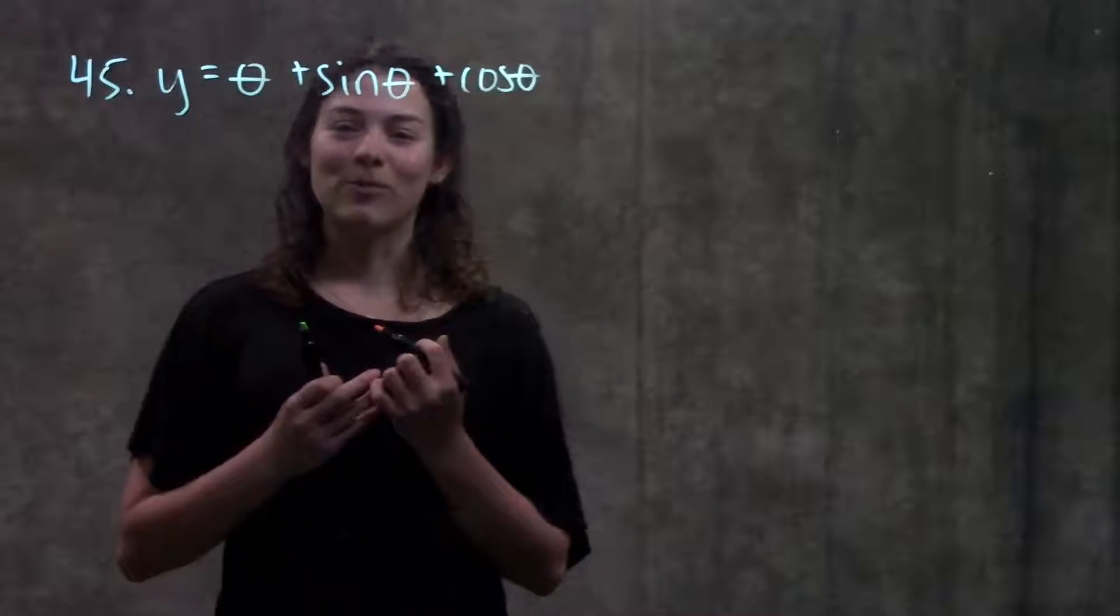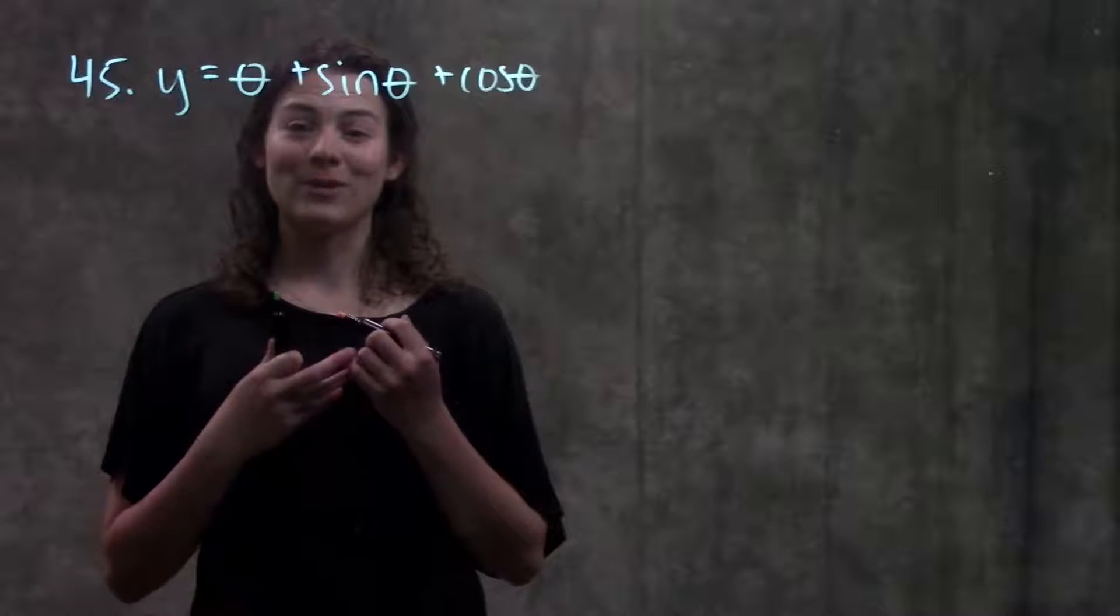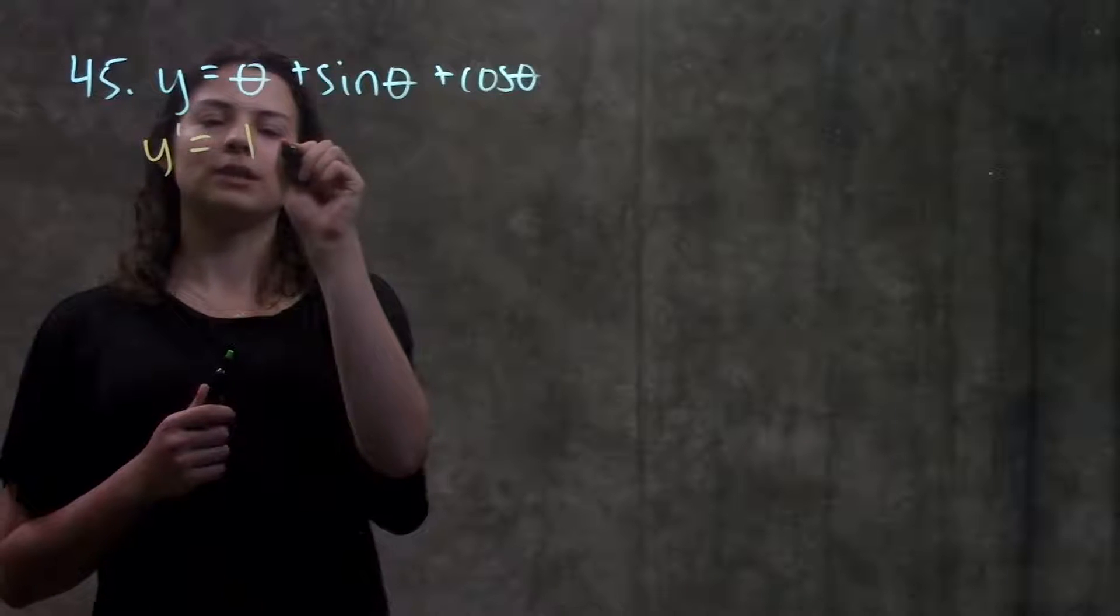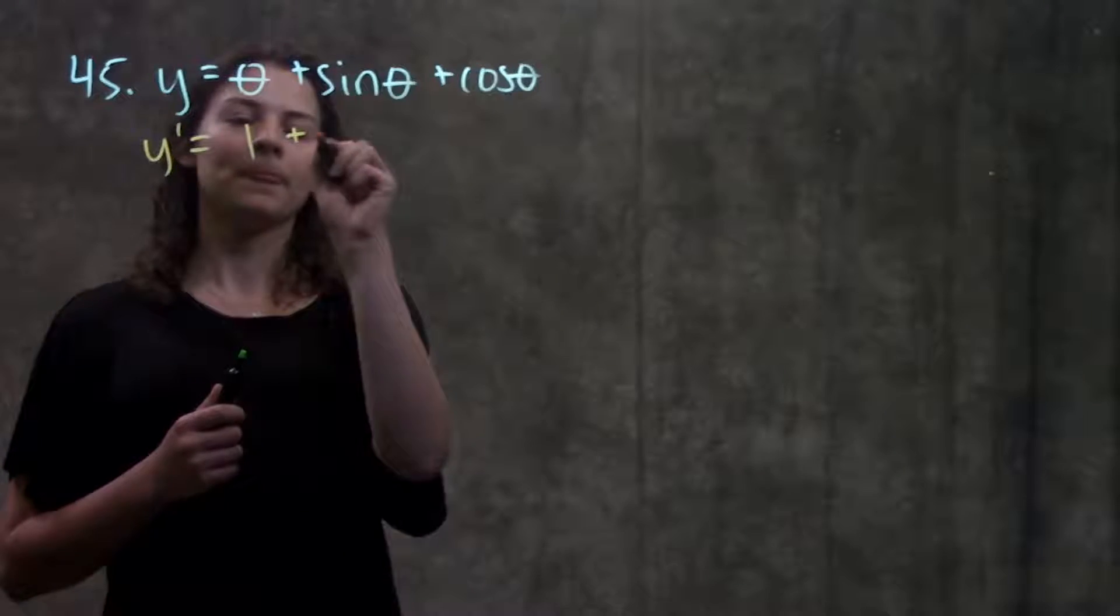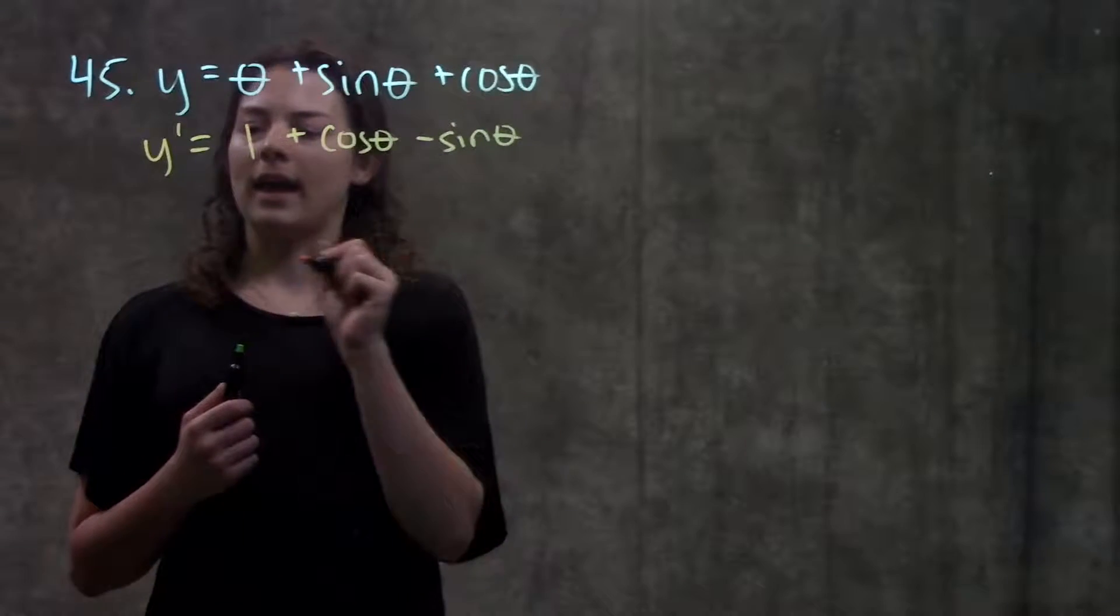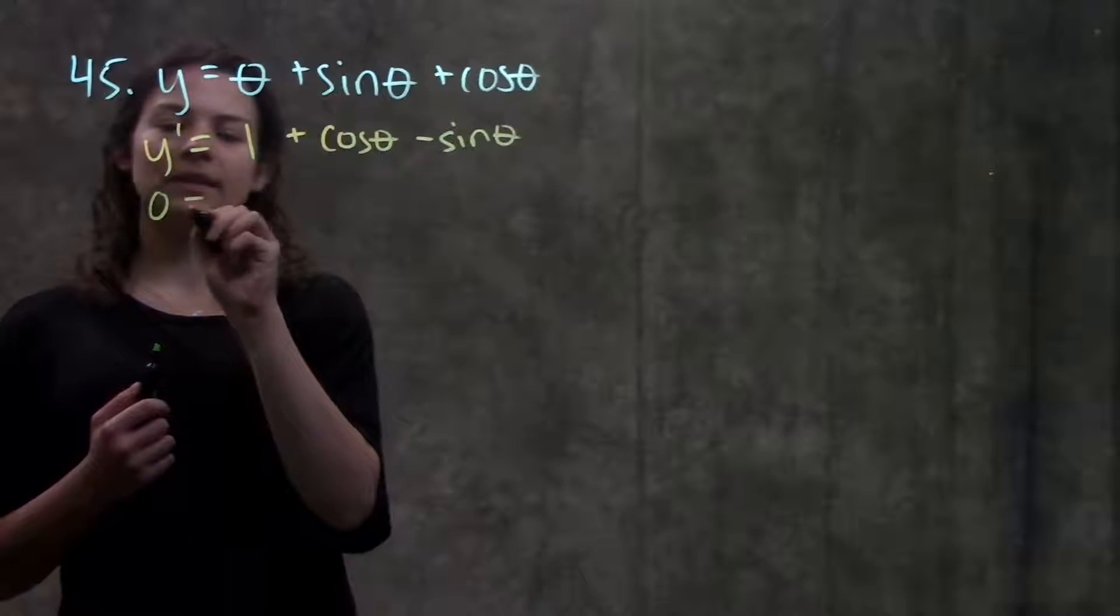So first step to find our critical points, remember critical points are where the derivative equals zero. So I'm going to take the derivative of this function, theta is my variable, so the derivative of that is just one, and this becomes cosine theta minus sine theta, and now for my critical points I just set this equal to zero.